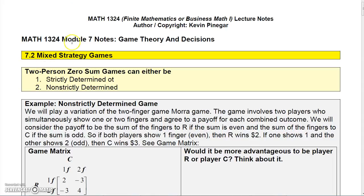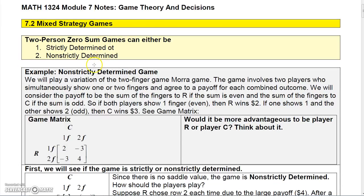As we saw in the last section, a two-person zero-sum game can be strictly determined or non-strictly determined. Let's look at an example of a non-strictly determined game.